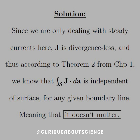And since j is divergence-less, we can use Theorem 2 from the vector field theory we established back in chapter 1, which only applies to divergence-less fields. From that, we can say that the integral of j dot dA is independent of surface for any given boundary line. So the reality is, it really doesn't matter because of this independence. That makes using this method with Amperian loops much easier and more consistent, given the complexity of these types of problems. So that's a pretty sweet result to find.